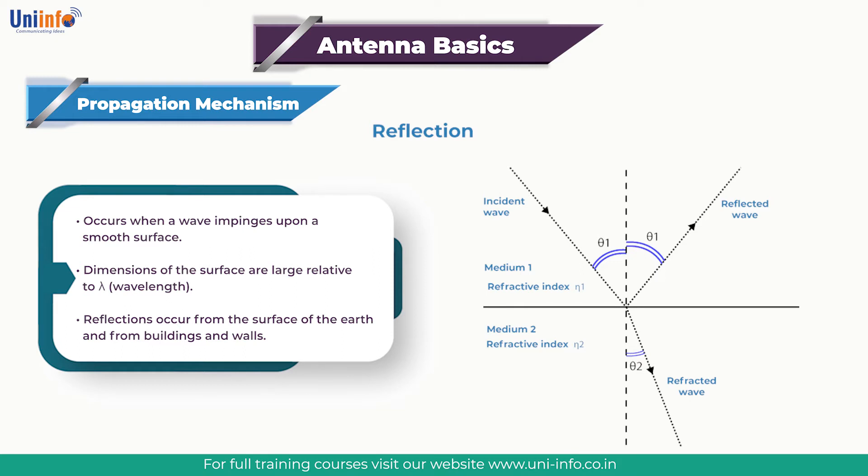The rules that govern the reflection of radio waves are simple and are the same as those that govern light waves. When a reflection occurs, it can be seen that the angle of incidence theta one is the same as the angle of the reflected ray. Additionally, there is normally some loss as a result of absorption or signal passing into the medium.